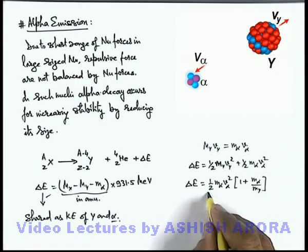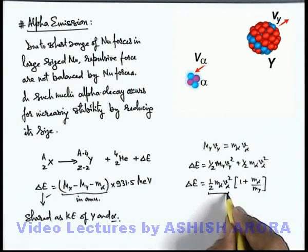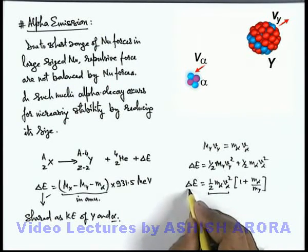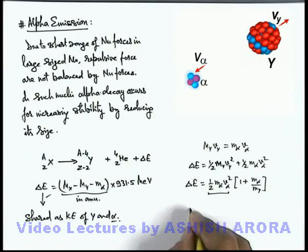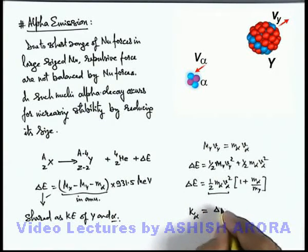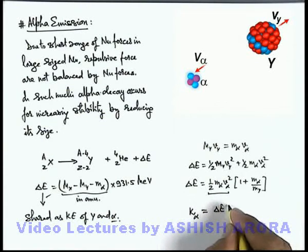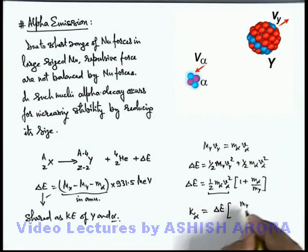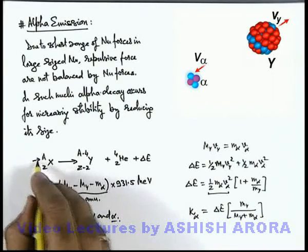And this is the kinetic energy of alpha particle which we can directly calculate by using the Q value of reaction. As kinetic energy of alpha particle which is emitted in alpha decay will be equal to, also, this delta E, which is the Q value of reaction, multiplied by M_Y over M_Y plus M_alpha.